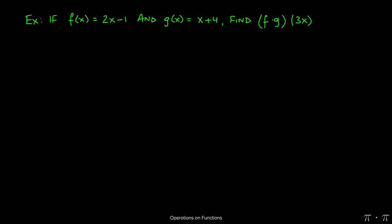In this question, we're given two functions, f of x equals 2x minus 1, and g of x equals x plus 4. We're asked to find f times g of 3x.